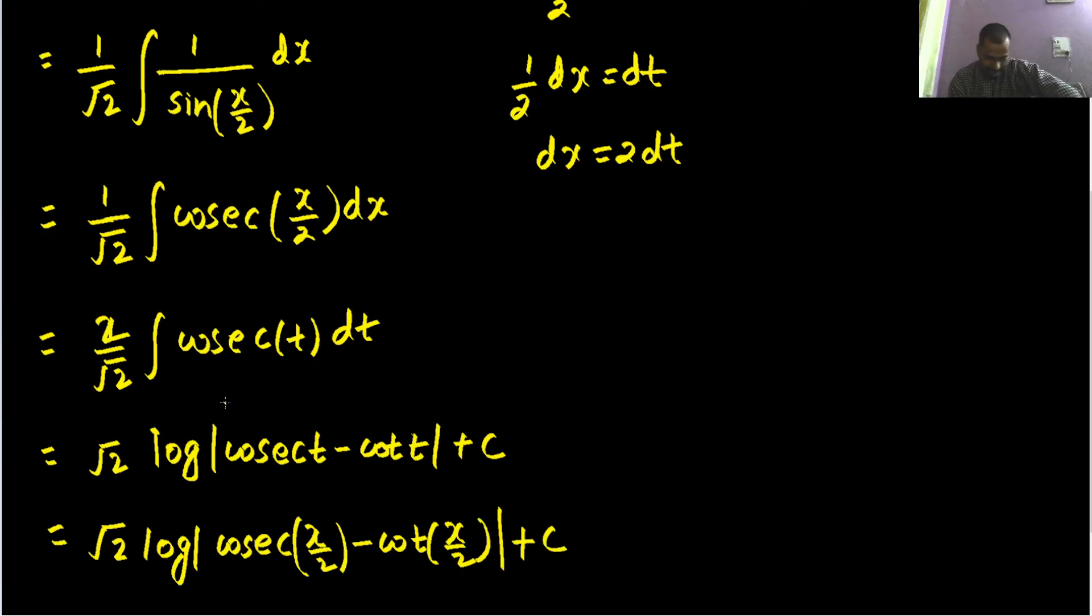And if you would have gone with the trick, then also integration of cosecant x by 2 will be log cosecant x by 2 minus cot x by 2 divided by 1 half. So if you divide by half, that means same as multiplying by 2. So if just have multiplied by 2, nothing as you have done.